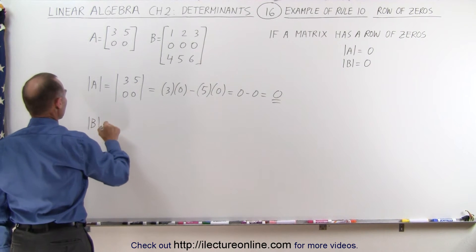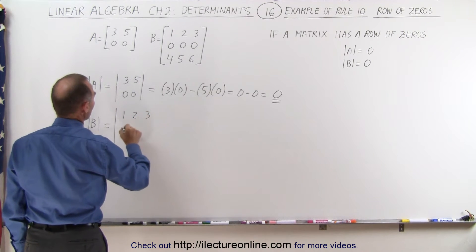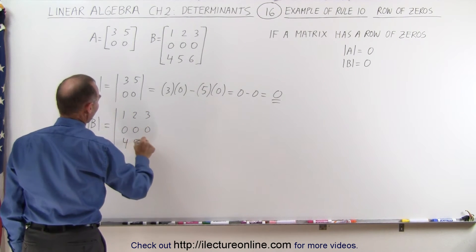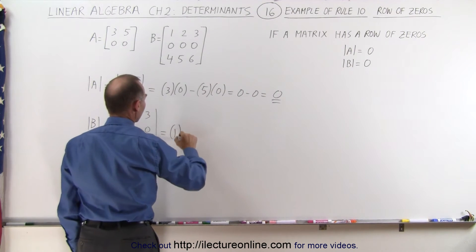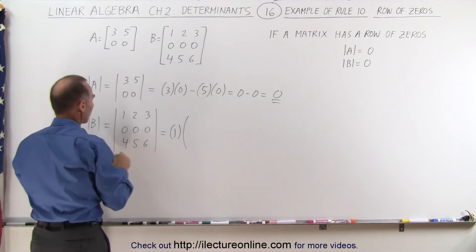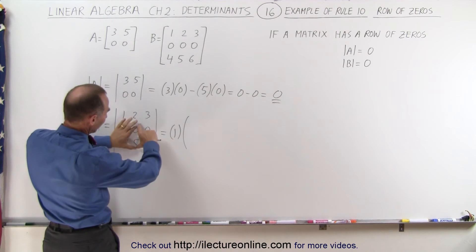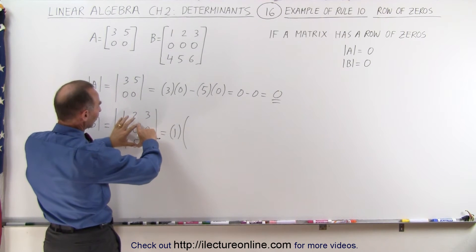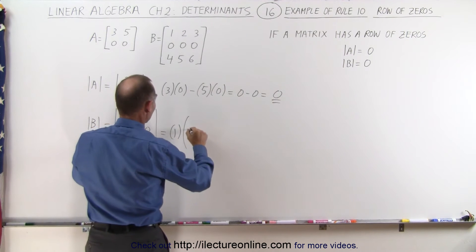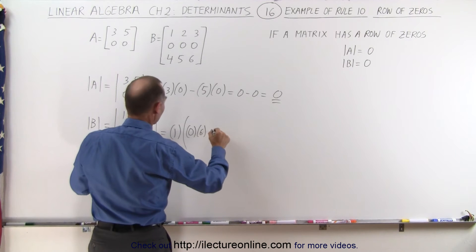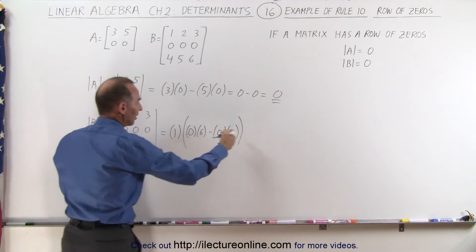We find the determinant of matrix B and that gives us the following: 1, 2, 3, 0, 0, 0, 4, 5, 6. And here we take the first element 1 times, now when we take this one here then this row disappears, that column disappears, you're just left with these four elements and that looks like a 2x2 matrix with a row of zeros and you get the same result: 0 times 6 minus 0 times 5 and of course that is equal to 0.